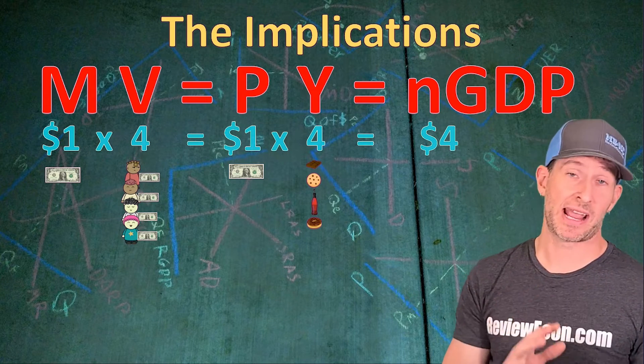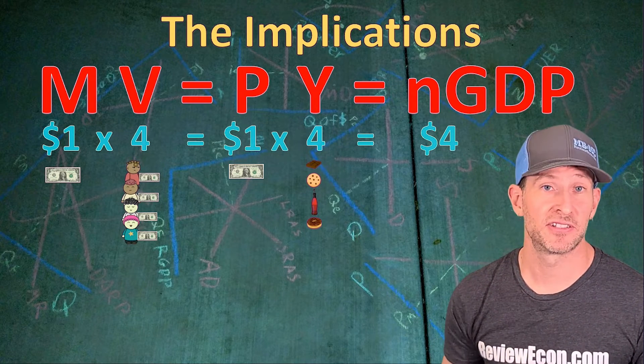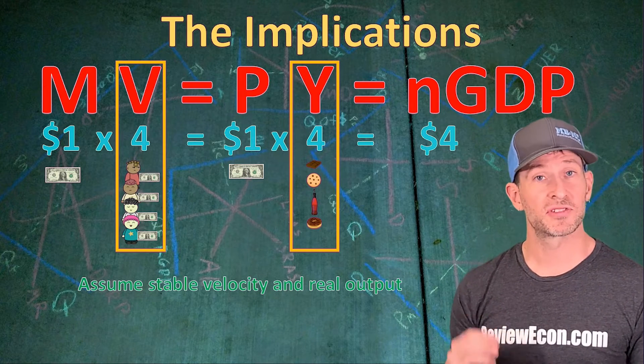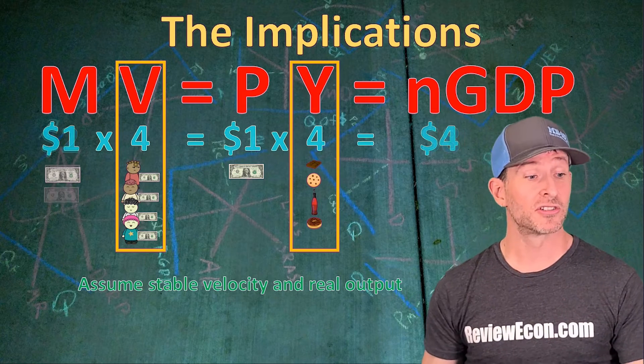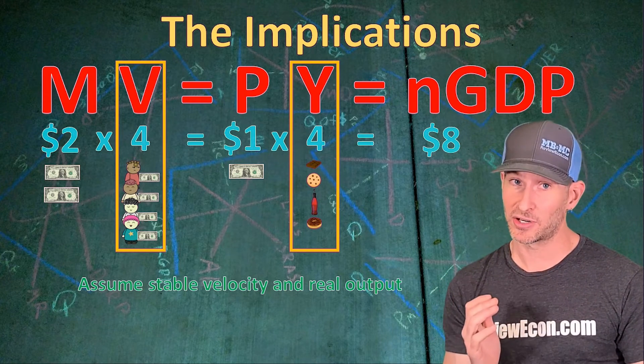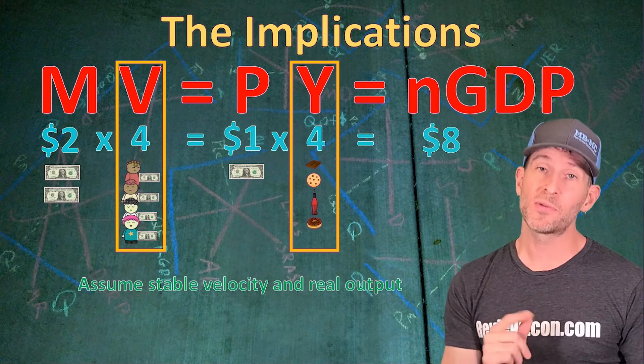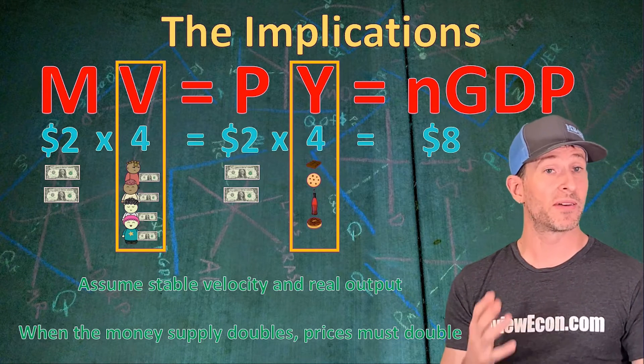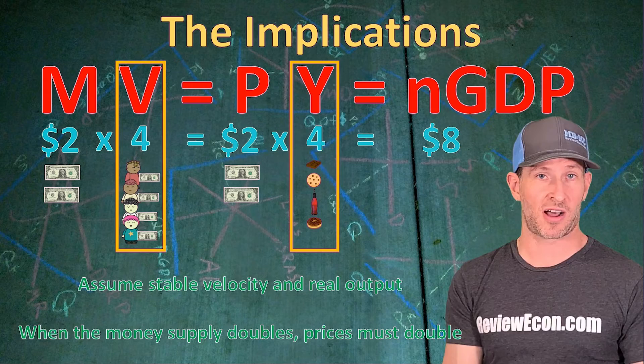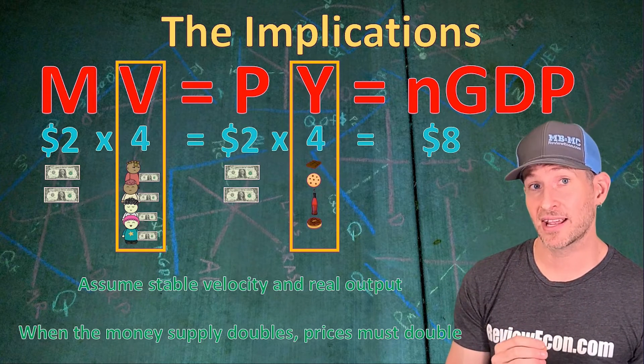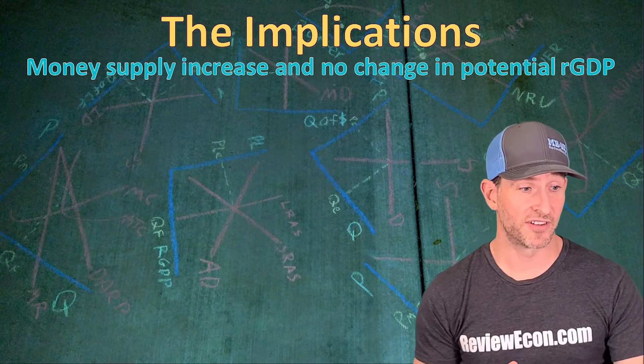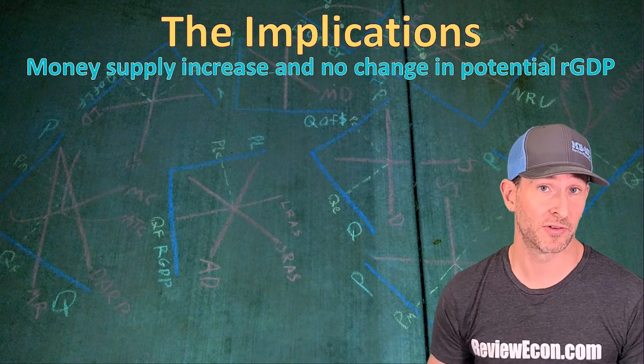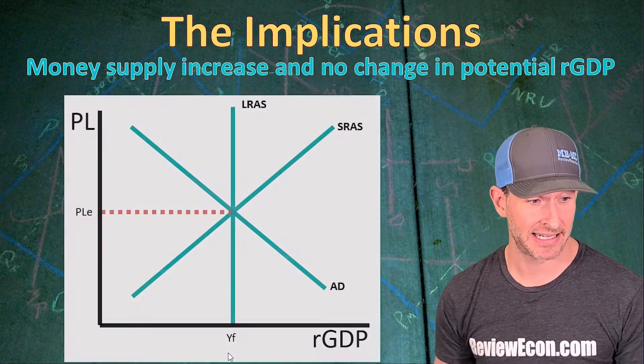Now, let's look at some implications that we have from this formula. If we assume, as monetarists often do, that the velocity of money is stable and real output is also stable in the short run, we will see that if we double the money supply from one dollar to two dollars, nominal GDP must increase up to eight dollars. And the only way this formula can hold true is if the price level also increases to two dollars. So, when the money supply doubles, prices must also double if we assume the velocity of money is stable along with real output.